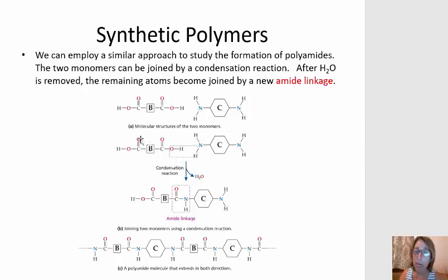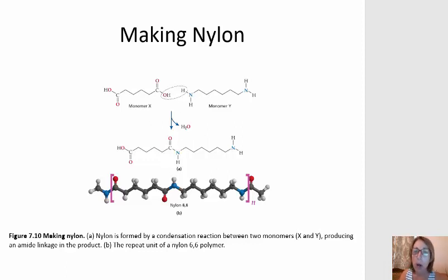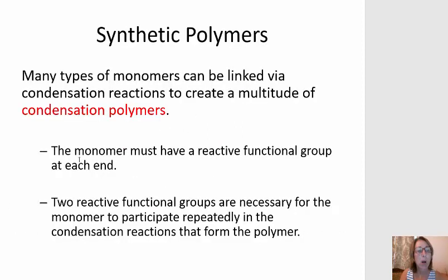C still has an amine group that can react with another B, and B still has a carboxylic acid group that can react with another C, giving us the capability of forming very long backbone chains — B to C to B to C — connected by an amide functional group. Nylon is a common polyamide. Here on this slide, we see a monomer with two carboxylic acid groups reacting with another monomer (Y) that has two amine groups. The hydroxyl from the carboxylic acid reacts with the hydrogen from the amine to form water, and the two monomers are connected by an amide linkage as the reaction continues.